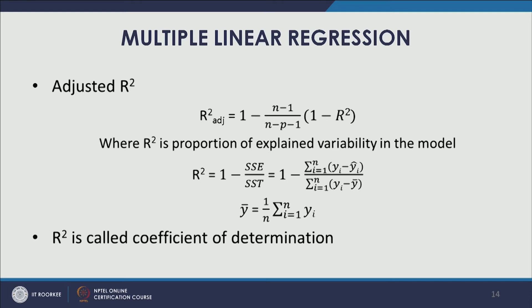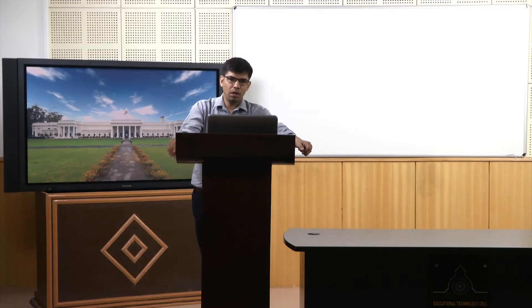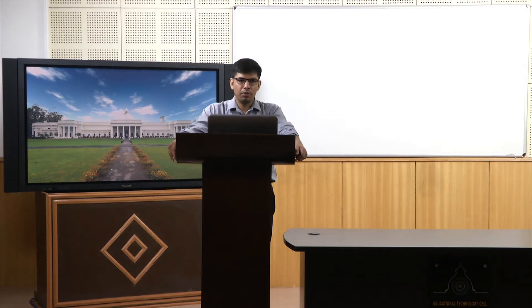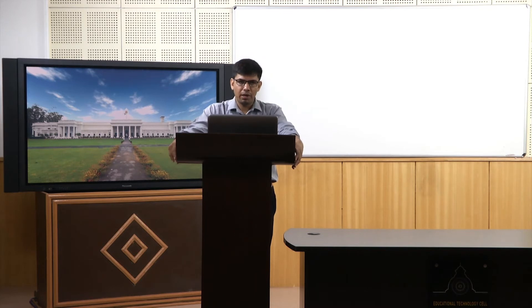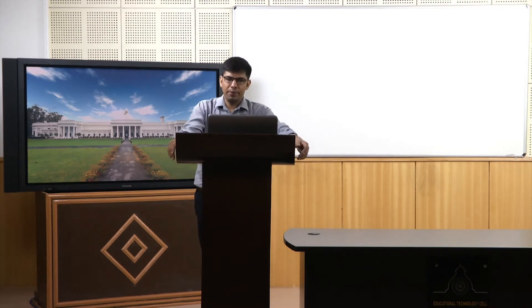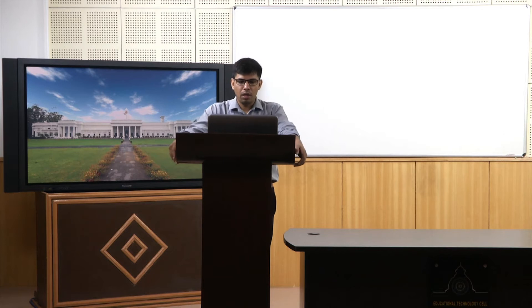R-squared is a proportion of explained variability in the model. It is also called the coefficient of determination and is mainly used in statistical modeling where we are generally looking for goodness-of-fit measures — trying to understand how much of the variability in the outcome is being explained by the model. Adjusted R-squared can be considered an improved version of R-squared, where we account for the degrees of freedom — the number of predictors.